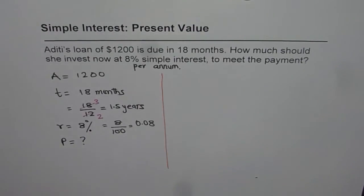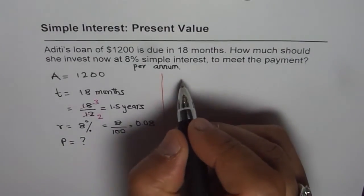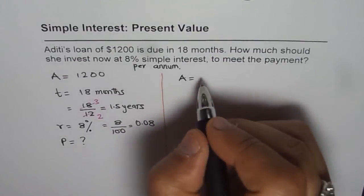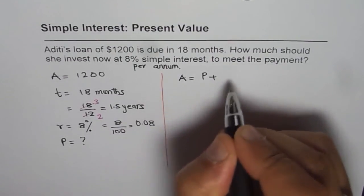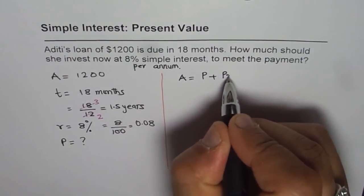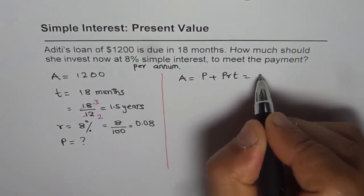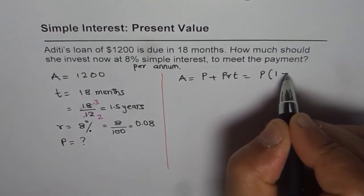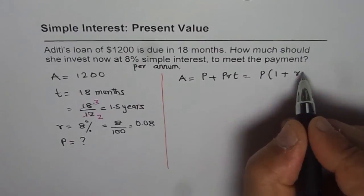So let's see how to do this kind of equation. Now what we know is amount equals principal plus interest, which is P·R·T. So we can take P common and the formula can also be written as P(1 + R·T).